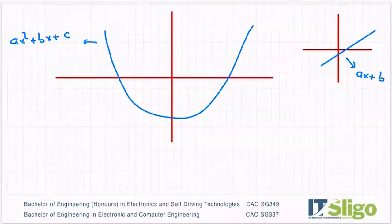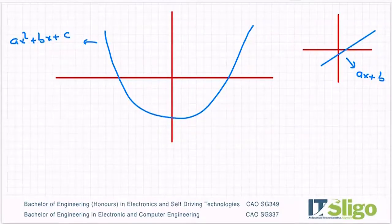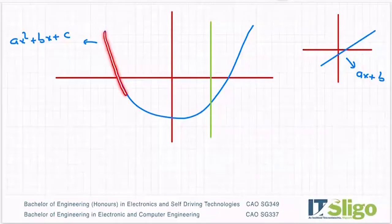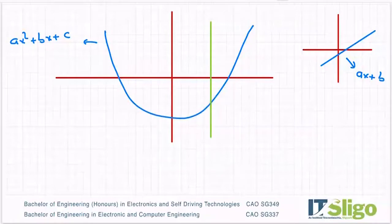So why are these functions? You can do what's called a vertical line test to prove that these are functions. When you do a vertical line test, it means that you draw a vertical line up through your function. And if that vertical line intersects your graph or your function at most once, then that graph represents a function.